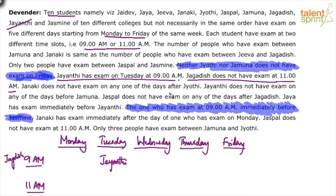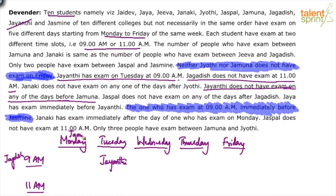Jayanti does not have exam on any of the days before Jamuna, which means Janaki has exam after Jamuna — so Janaki is after Jamuna. Now we know Jayanti is on Tuesday, so Jamuna has to be on Monday. Jaya has exam immediately before Jayanti, and since Jayanti is on Tuesday, Jaya should be on Monday. So we know the two persons for Monday are Jaya and Jamuna, though their specific slots are not yet clear.